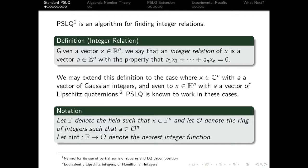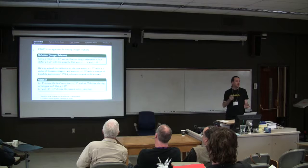So starting at the start, if we've got a real vector, we say an integer relation of that vector is just a vector of integers such that the linear combination is equal to zero. So the integer relation is the integer coefficients of the linear combination.